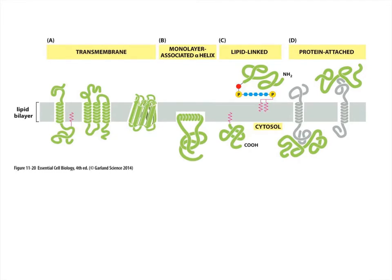We're going to return to figure 11-20, which shows off those shapes. Notice that there are a lot of proteins that have an alpha helix, which allows them to span the membrane, and they can cross once or multiple times. We can also see a monolayer-associated alpha helix. The second possibility is a beta pleated sheet, which can form the beta barrel.